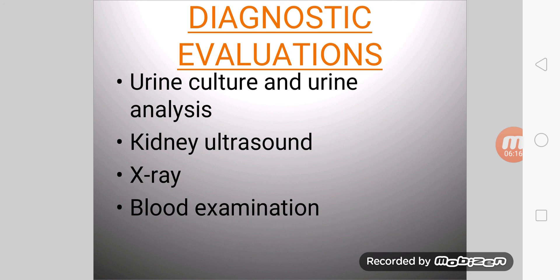Diagnostic evaluation: in straightforward cases, a diagnosis may be made and treatment given based on symptoms alone without further laboratory confirmation. In complicated or questionable cases, it may be useful to confirm the diagnosis via urinalysis — looking for the presence of urinary nitrates, white blood cells, leukocytes, or leukocyte esterase. Urine microscopy looks for the presence of red blood cells, white blood cells, or bacteria. Urine culture is deemed positive if it shows a bacterial colony count of greater than or equal to 10³ colony-forming units per mL. Antibiotic sensitivity can also be tested, making cultures useful in the selection of antibiotic treatment.